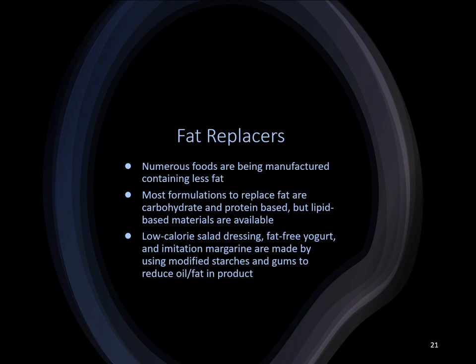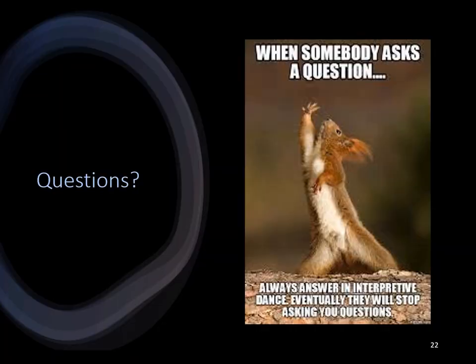Fat replacers are typically derived from carbohydrates or proteins, which are restructured to replace fat in certain foods. By substituting fat replacers for fats, you can reduce overall total fat intake and theoretically lose weight, though you need to be careful not to compensate by eating full-fat items elsewhere. Some replacers are made from modified starches and gums. Suggestions include using low-calorie salad dressing or replacing margarine and mayonnaise with fat-free yogurt. That's the end of chapter six.